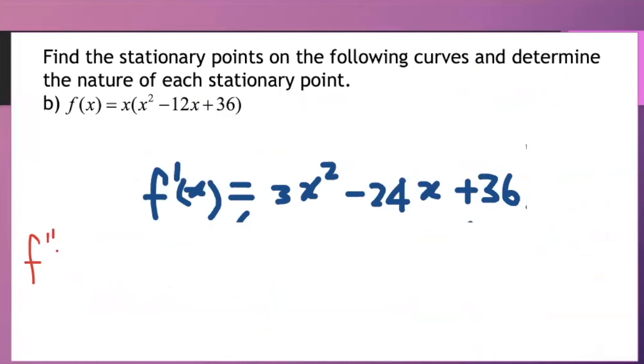Now to determine the nature I have my f prime and I will be doing the second derivative differentiating the f prime once more to get f double prime. That gives us 6x minus 24. So when you differentiate minus 24x you get minus 24. Now substituting x equal to the first stationary point when we work this out we will get a negative answer. The negative answer tells me that it's going to be a maximum point.